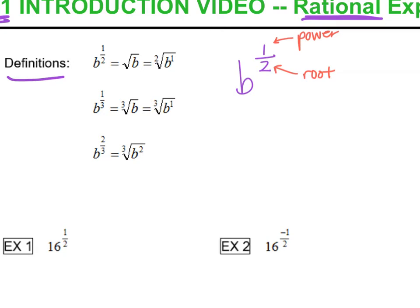So b to the two-thirds power, that one looks a little bit different because we don't have that 1. So first, the power is 2, so it's b to the second power, and the root is 3, so it's the cube root. So it's the cube root of b squared.